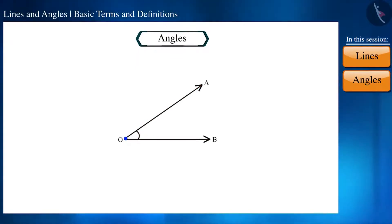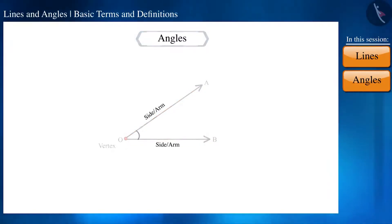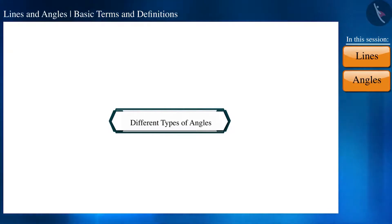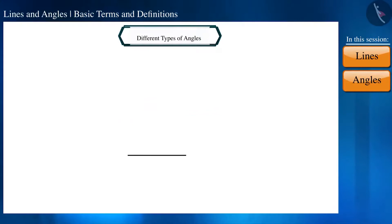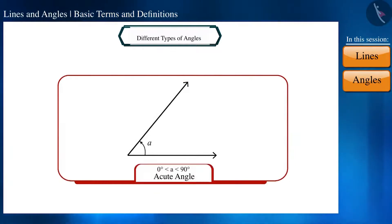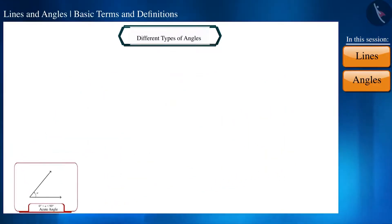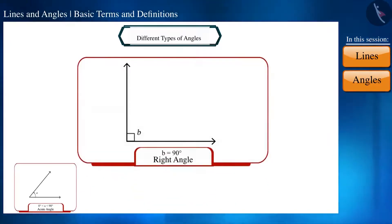Let's discuss angles. If two rays arise from the same endpoint, an angle is formed. We call this common endpoint the vertex of the angle, and the rays forming the angle are called the sides or arms. If the measure of an angle is between 0 and 90 degrees, it is called an acute angle. If it is exactly 90 degrees, it is called a right angle.